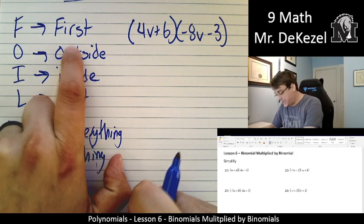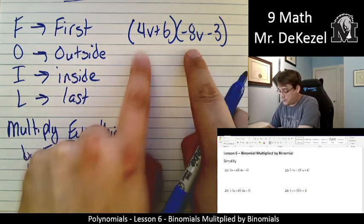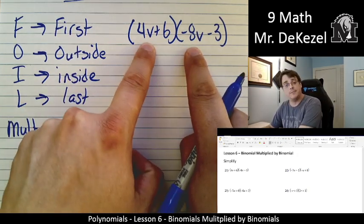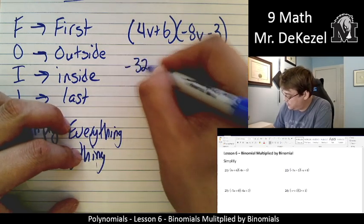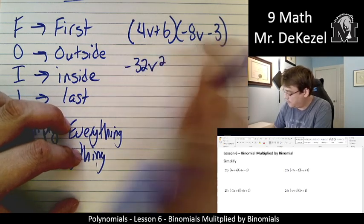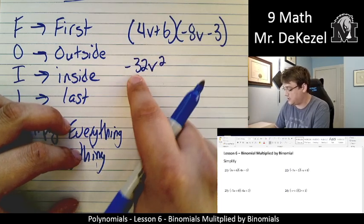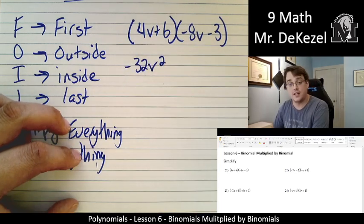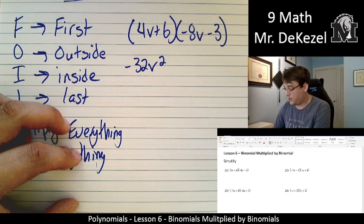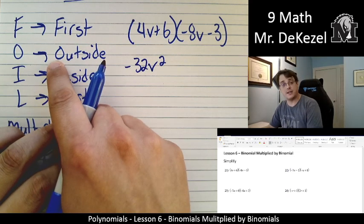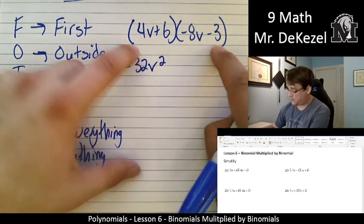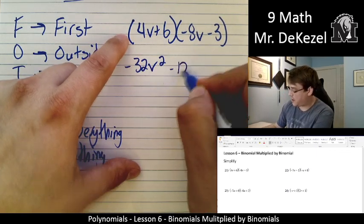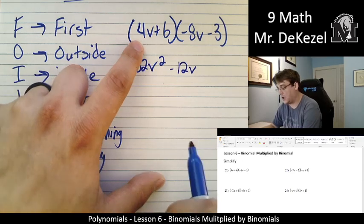So we are going to multiply the first terms. The first terms would be 4V and -8V. So that would be -32V². 4 times -8 is -32. V times V is V². We're going to then do the outside terms. That would be these two. 4V and -3. So that would be -12V. 4 times -3. And we bring the V along.